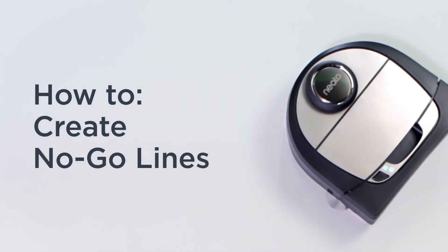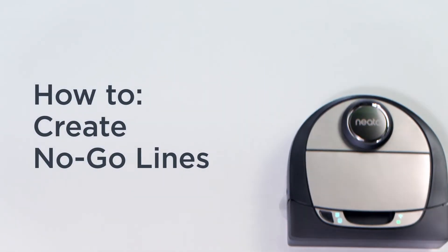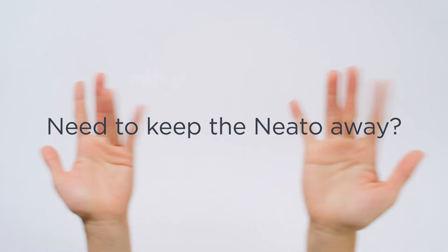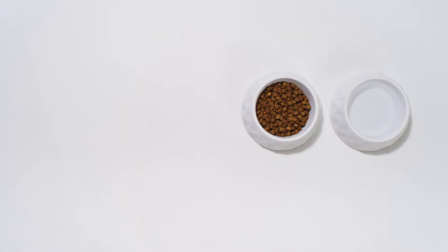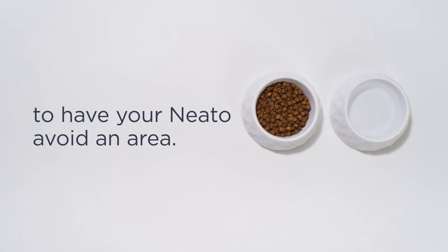How to create no-go lines. Need to keep the Neato away? Set up no-go lines on your floor plans to have your Neato avoid an area.